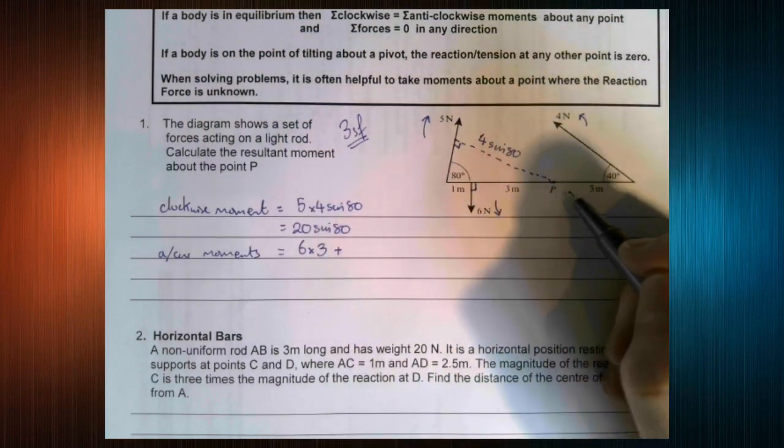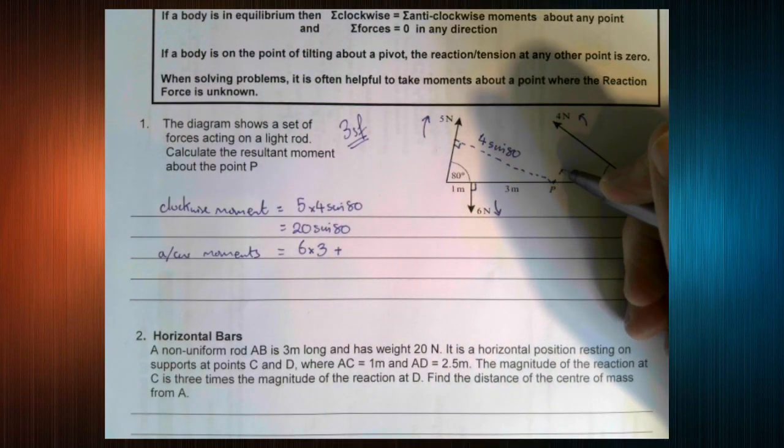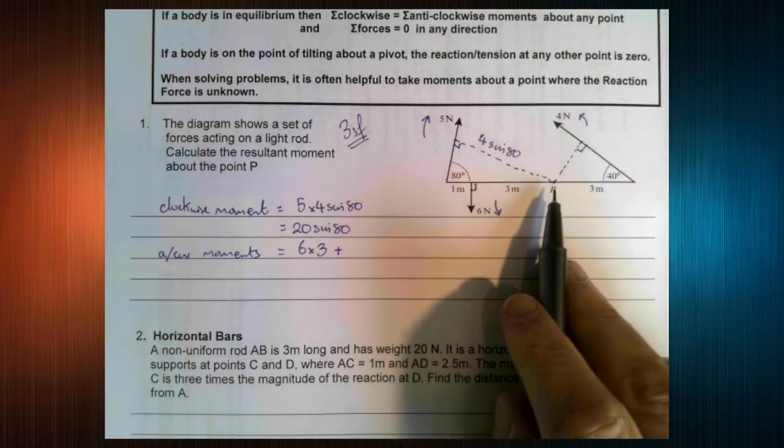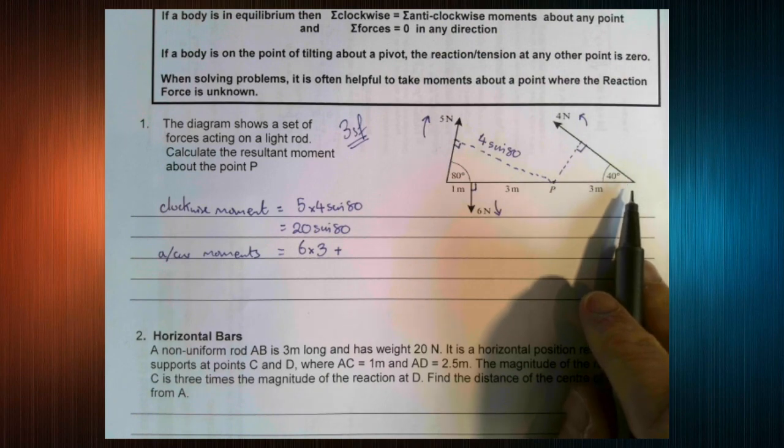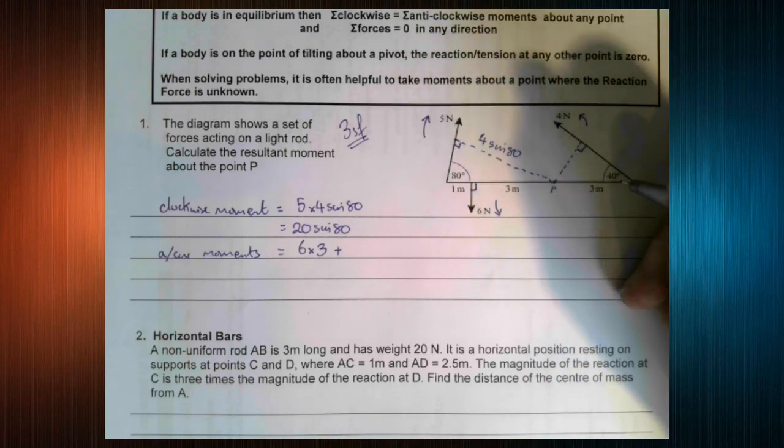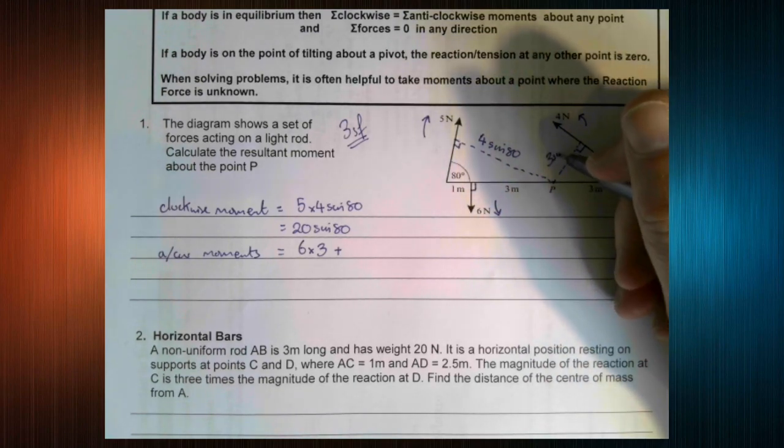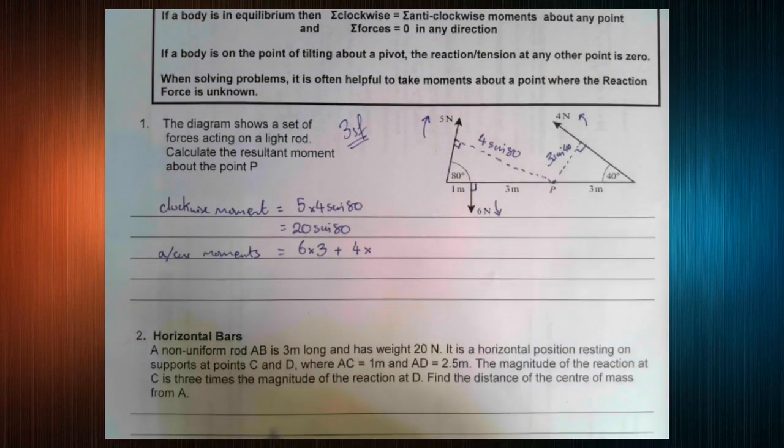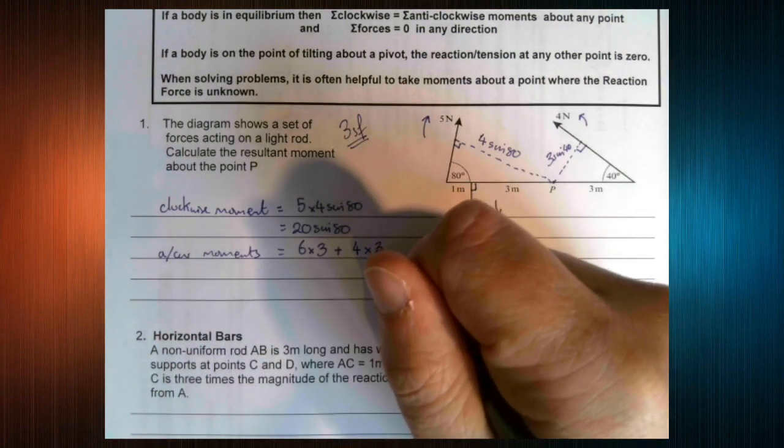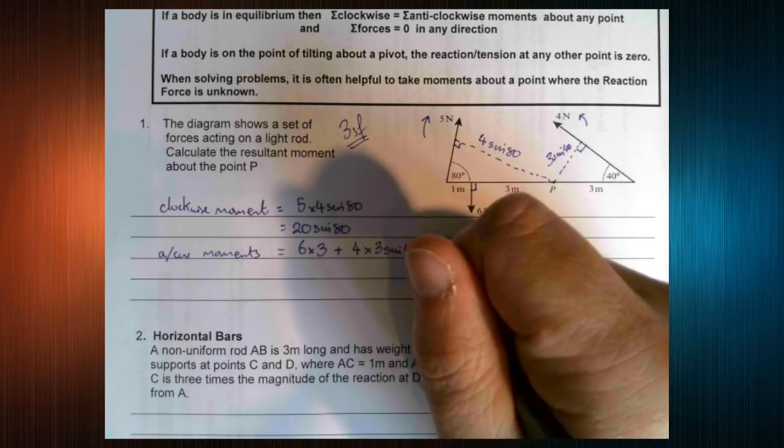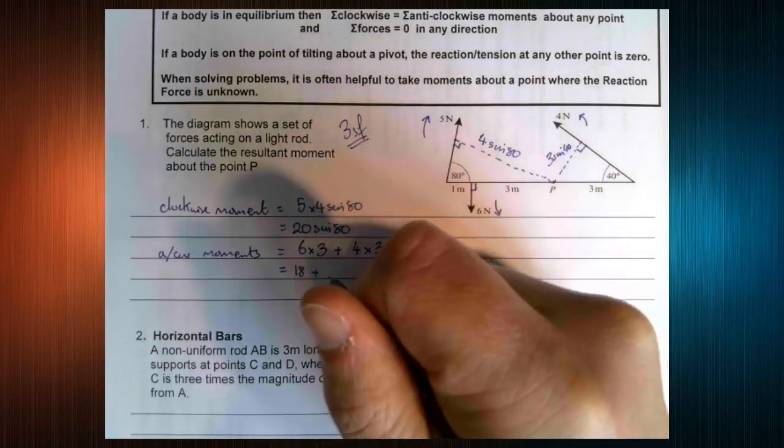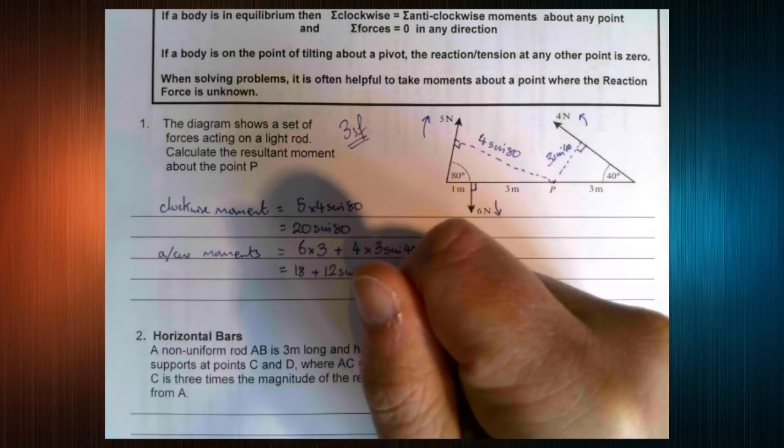This one, again, we're working at an angle, so we need this distance here. The distance from P to the base of the force is 3 metres, or to where it connects is 3 metres. So this one is 3 sine 40. So we've got our force, 4 times the perpendicular distance. So in this case, we get 18 plus 12 sine 40.